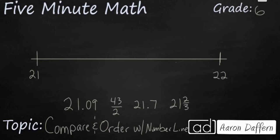We have four terms down here: 21.09 or 21 and 9 hundredths, 43 over 2, 21.7 or 21 and 7 tenths, and then 21 and 2 thirds. And the question is, which one of these is going to be closest to 22?